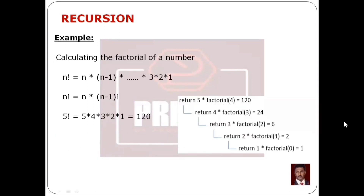Example: calculating the factorial of a number. We use the formula: n factorial is equal to n into n minus 1 factorial. For example, 5 factorial is 1 × 2 × 3 × 4 × 5. We multiply these together and the result is 120. That is the answer of 5 factorial.